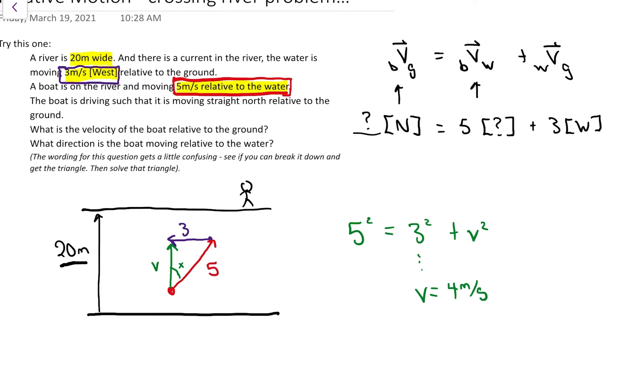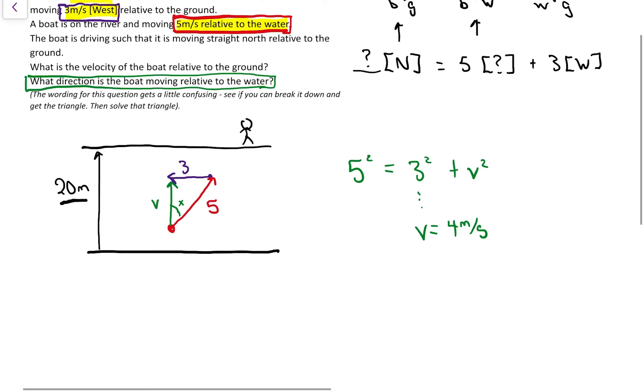So that means that the velocity of the boat, well, the velocity of this 4 is what the person on the ground sees. So we've now got the answer to the second question. We know that it's going 4 relative to the ground, but I don't know the direction yet. So let's keep doing some work.